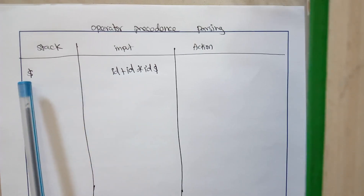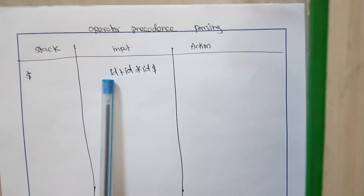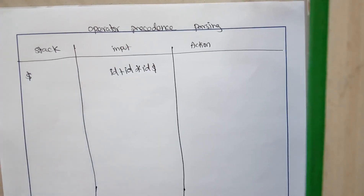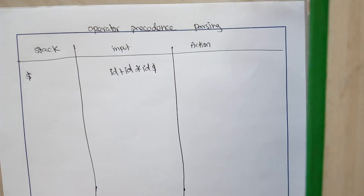We are going to check the precedence of dollar with that of id. There are five possible cases: it may have a lesser precedence, a higher precedence, or equal precedence. If it is an error condition we reject it, and if it is an accepting criteria we end the process. So there are five possible actions: lesser precedence, greater precedence, equal precedence, error condition, or accepting condition.